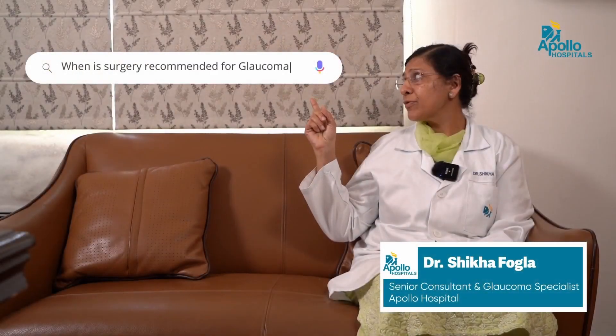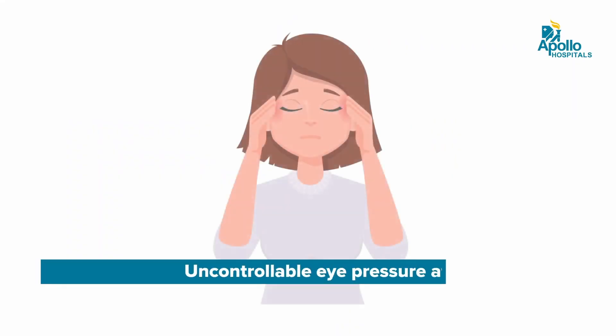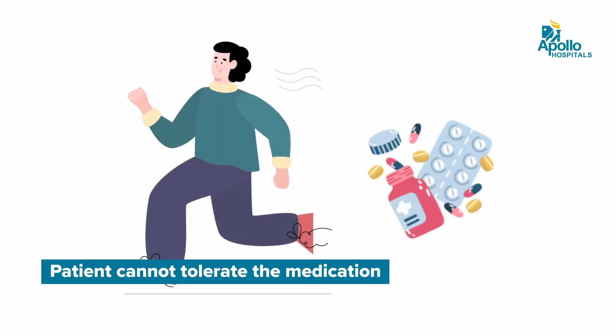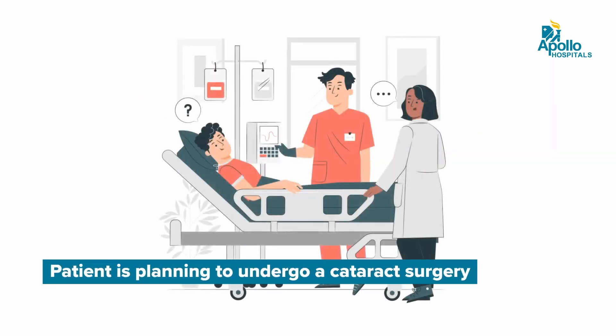When is surgery recommended for glaucoma? Glaucoma surgery is usually recommended if the eye pressure is not under control on medication, or the patient is unable to tolerate the medications, or the patient is planning to undergo cataract surgery when a decision can be made whether to do the glaucoma surgery or not. To conclude, any person who has risk factors for development of glaucoma should have a checkup at the earliest, and depending upon the severity of the disease, the periodicity of the examination will be decided by the treating doctor.